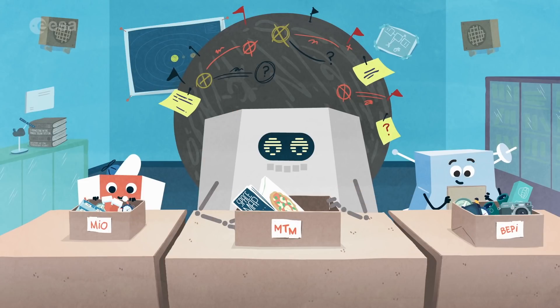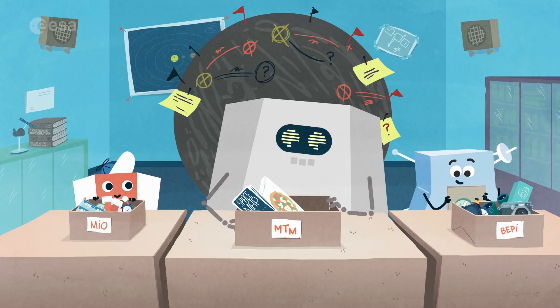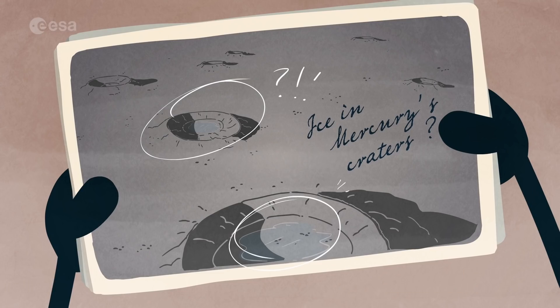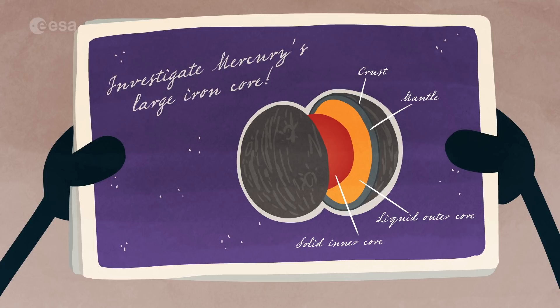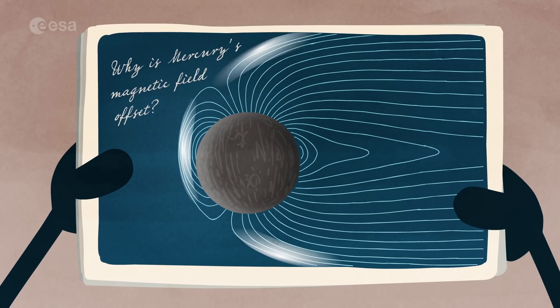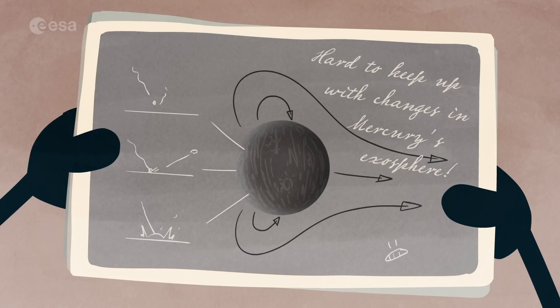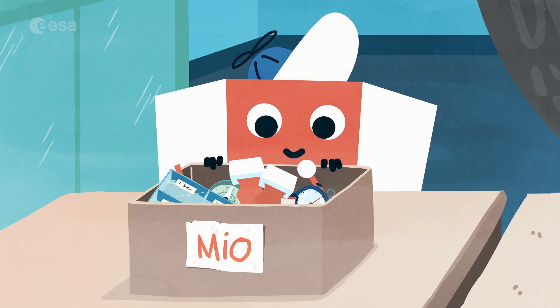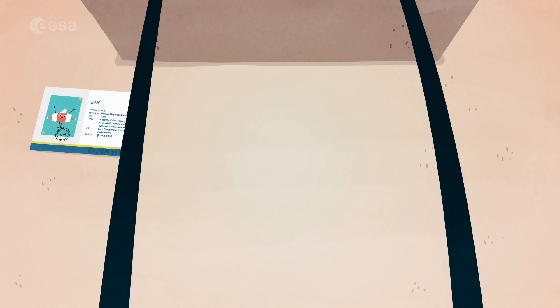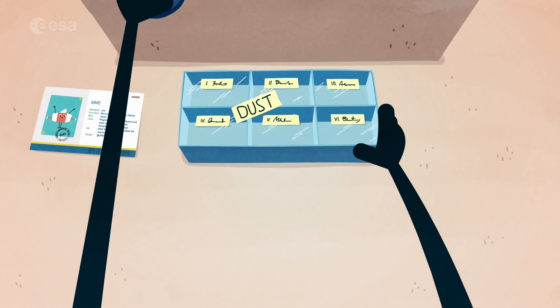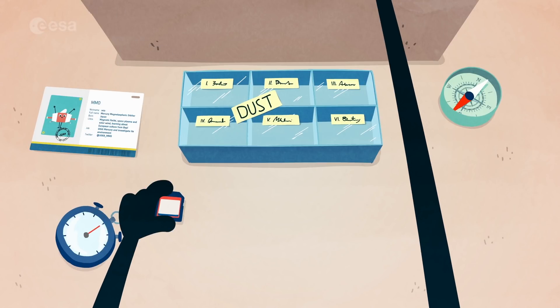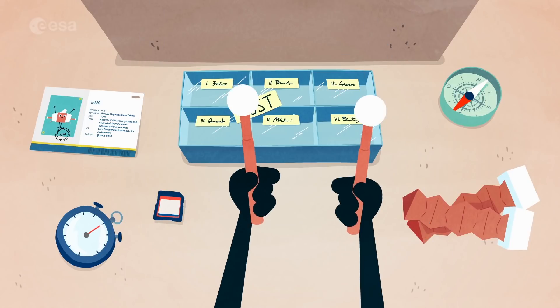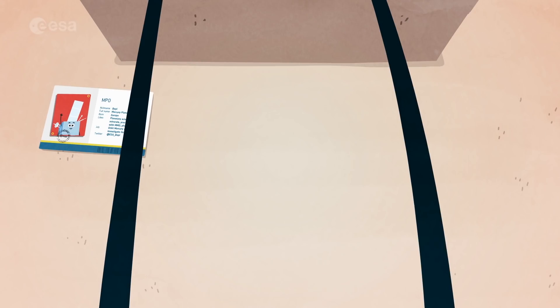As we were growing up, our cousin Messenger sent back news of many interesting discoveries at Mercury, which left us quite curious. I'm really interested in geological processes like impact cratering, volcanic eruptions and tectonic activity, and how that changes the chemistry and appearance of a planet's surface over billions of years. Mio's favorite subjects are magnetic fields and space plasmas, and studying how the sun influences a planet's environment. That's actually something we're both going to do. Investigate how the solar wind interacts with a planet's magnetic field from our two different viewpoints.